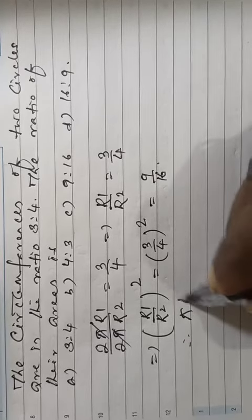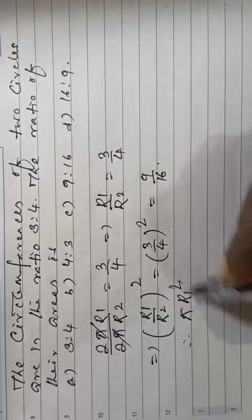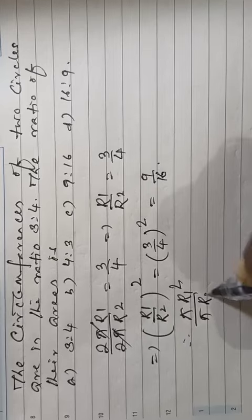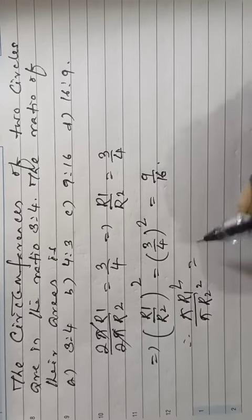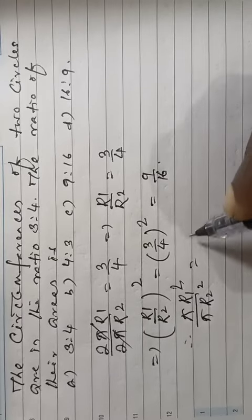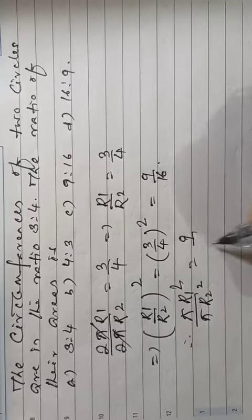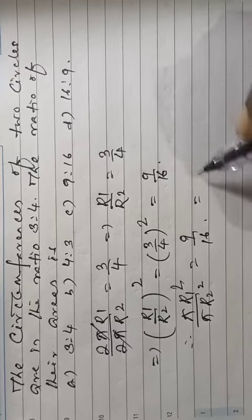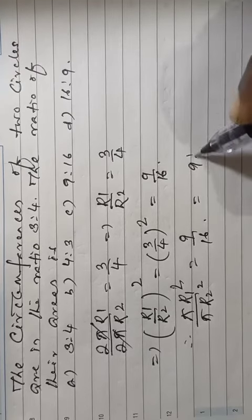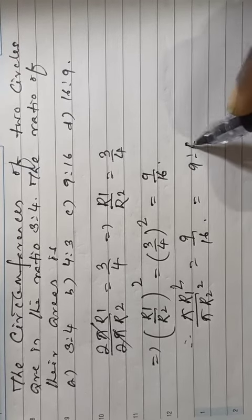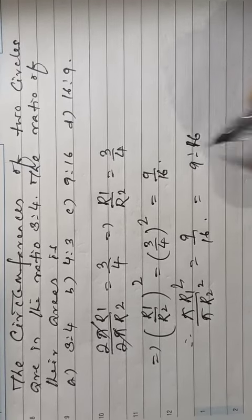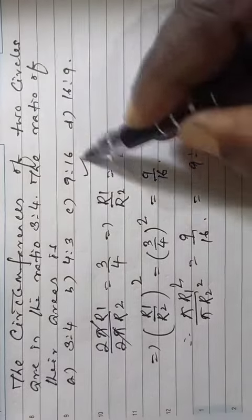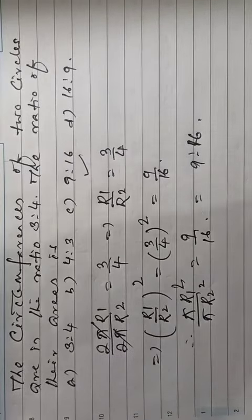Now, πR1 squared by πR2 squared is equal to 9 by 16. So, 9 is to 16. The answer is option C. This is the answer.